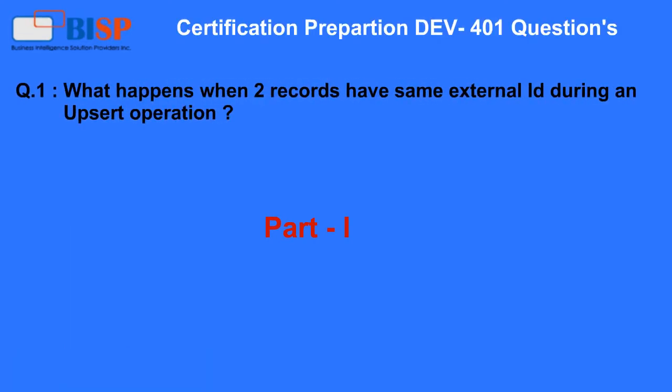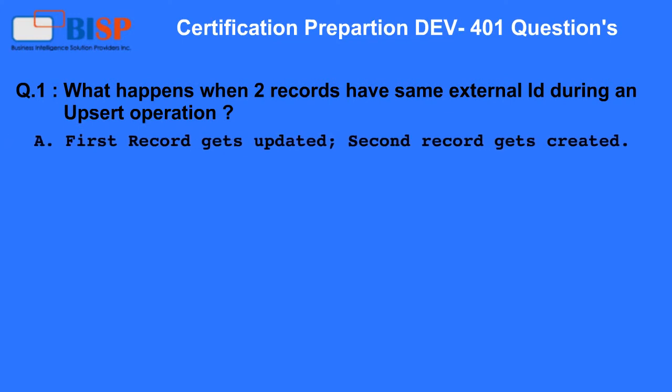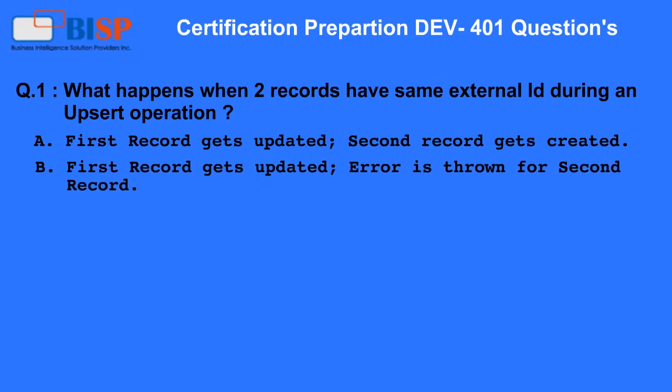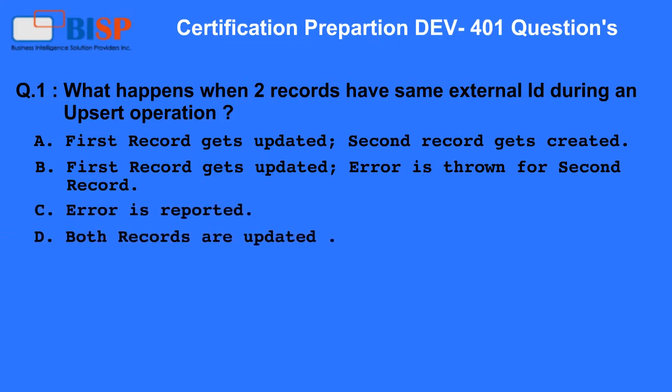Question 1. What happens when two records have the same external ID during an upsert operation? A. First record gets updated, second record gets created. B. First record gets updated, error is thrown for second record. C. Error is reported. D. Both records are updated.